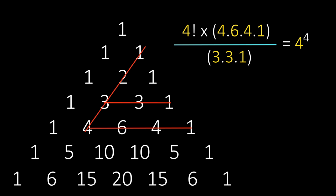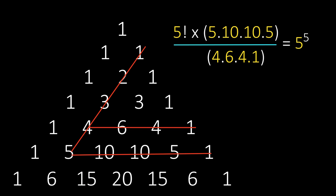Similarly, when we multiply five numbers and the fifth row and divide with the fourth row, we get 5 raised to power 5. More generally, we can write this.